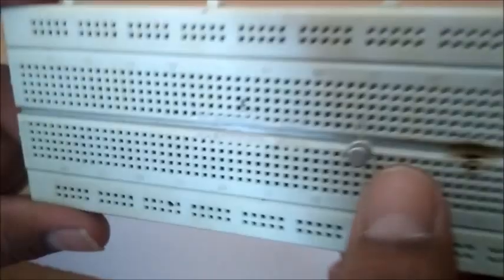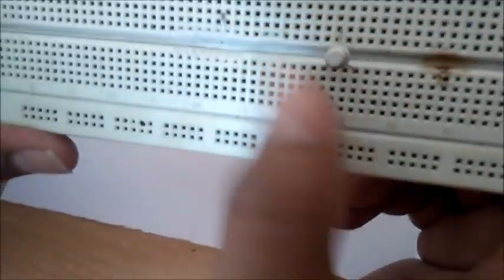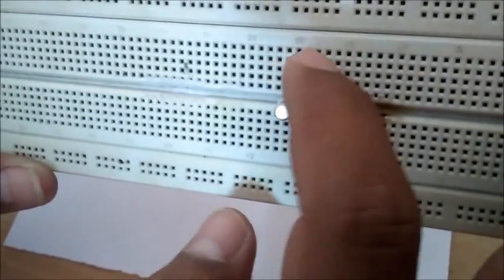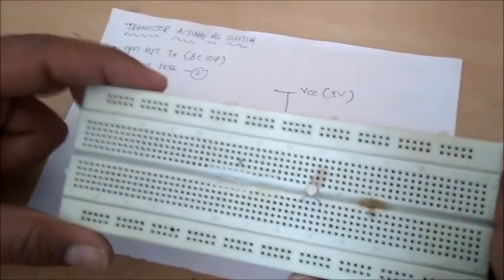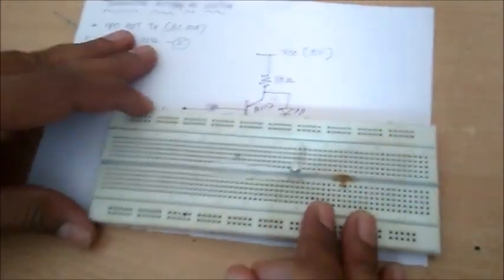Take the breadboard and place the BJT transistor onto it. Here you can see the emitter, base, and collector. The notch which is pointing shows the emitter. According to the circuit, now connect the base with the resistor.